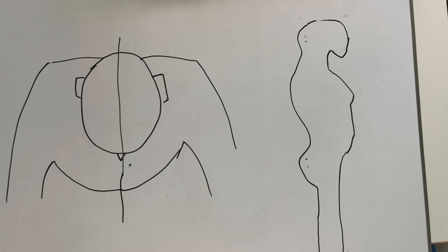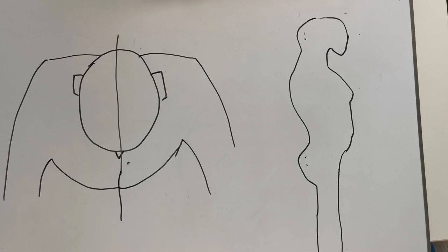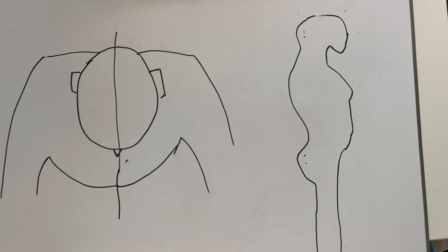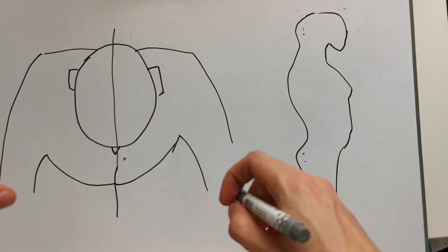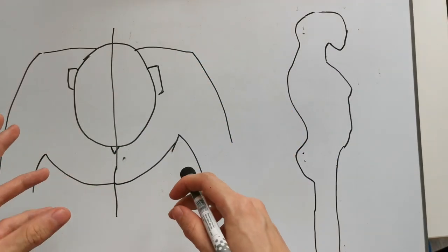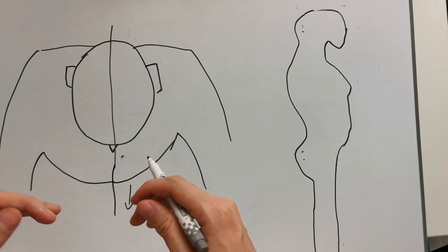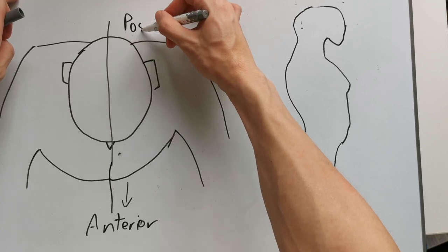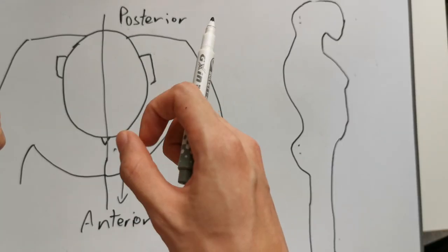Before I can describe the anatomy of the shoulder, there are some terms within medicine that are very important to understand, because in medicine it's important to be able to describe things accurately and precisely so other professionals understand which part of the body you're referring to. When describing human anatomy you have to be able to orientate yourself. On this left-hand side we have a top-down view of a person. The front is described as the anterior part and the back is described as the posterior part.